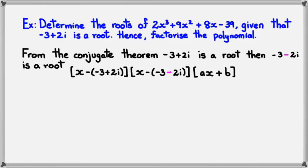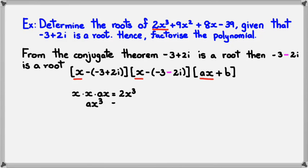We can look at the coefficient of x cubed: x multiplied by x multiplied by ax should equal 2x cubed. So x times x times ax equals 2x cubed, which simplifies to ax³ equals 2x³, meaning a is equal to 2.